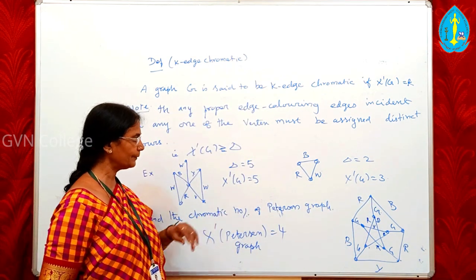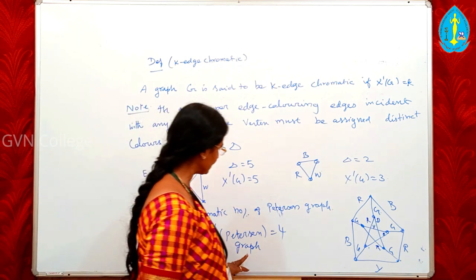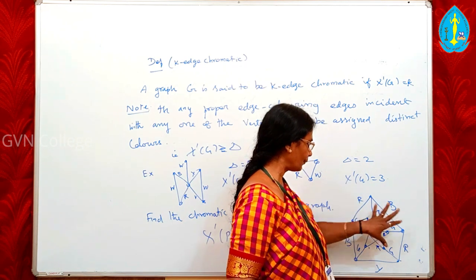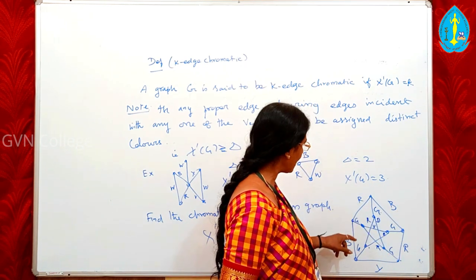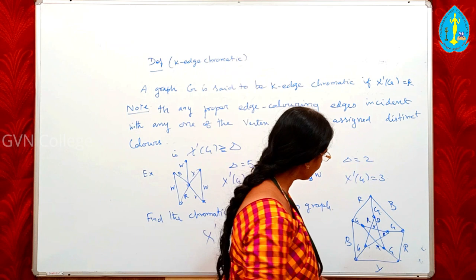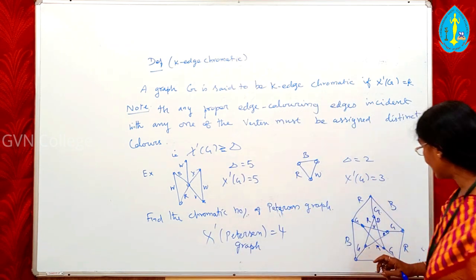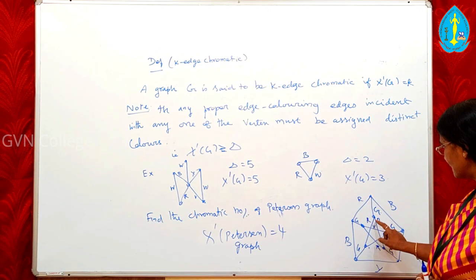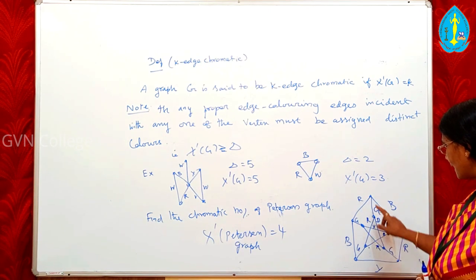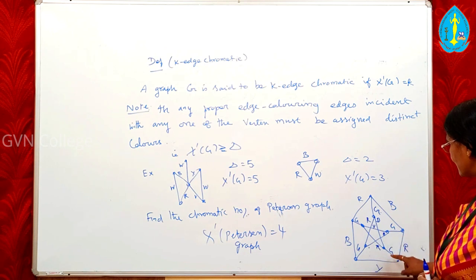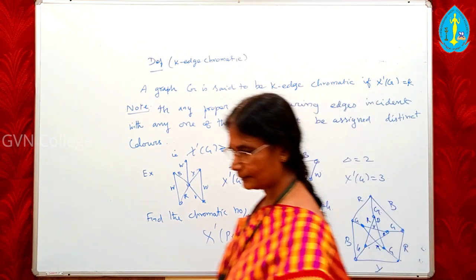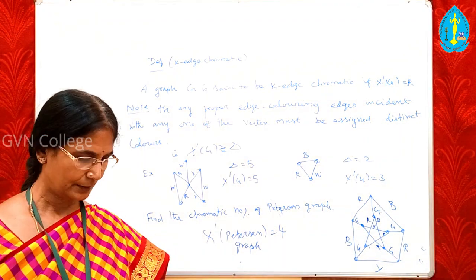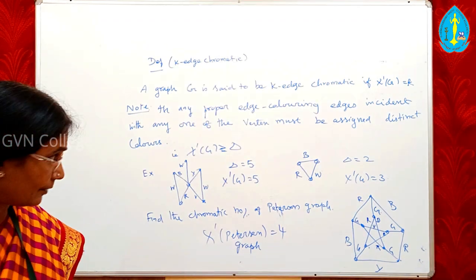Find the edge chromatic number of the Petersen graph. The outer cycle is given 4 colours, the inner cycle uses 3 colours — P, R, B, R, Y — and the connecting edges use colour G. Therefore the edge chromatic number of the Petersen graph is 4.